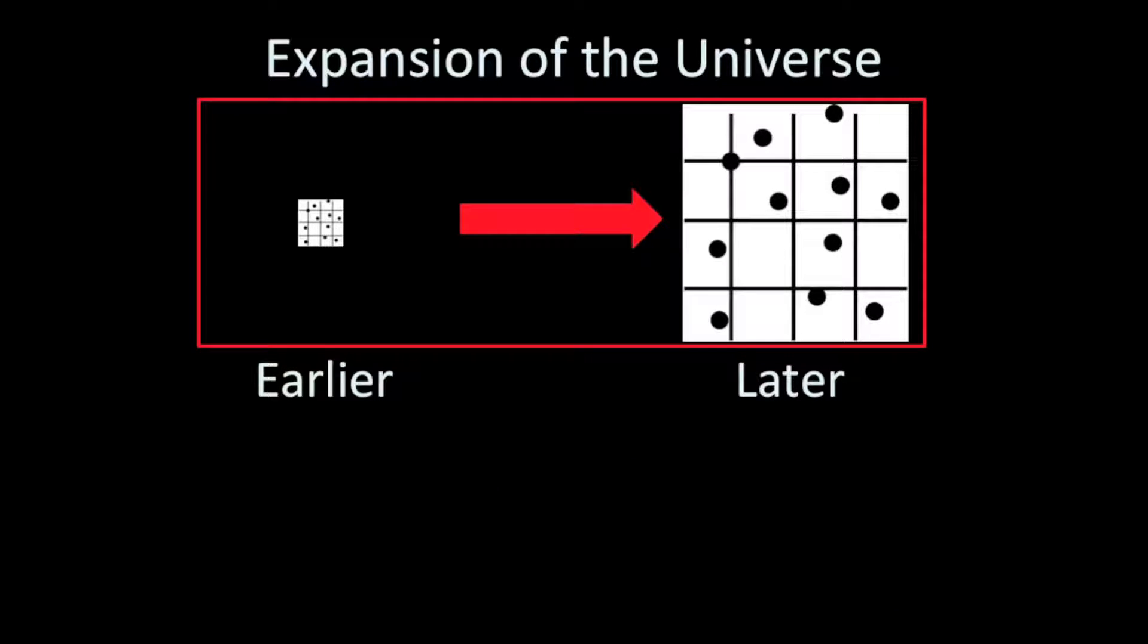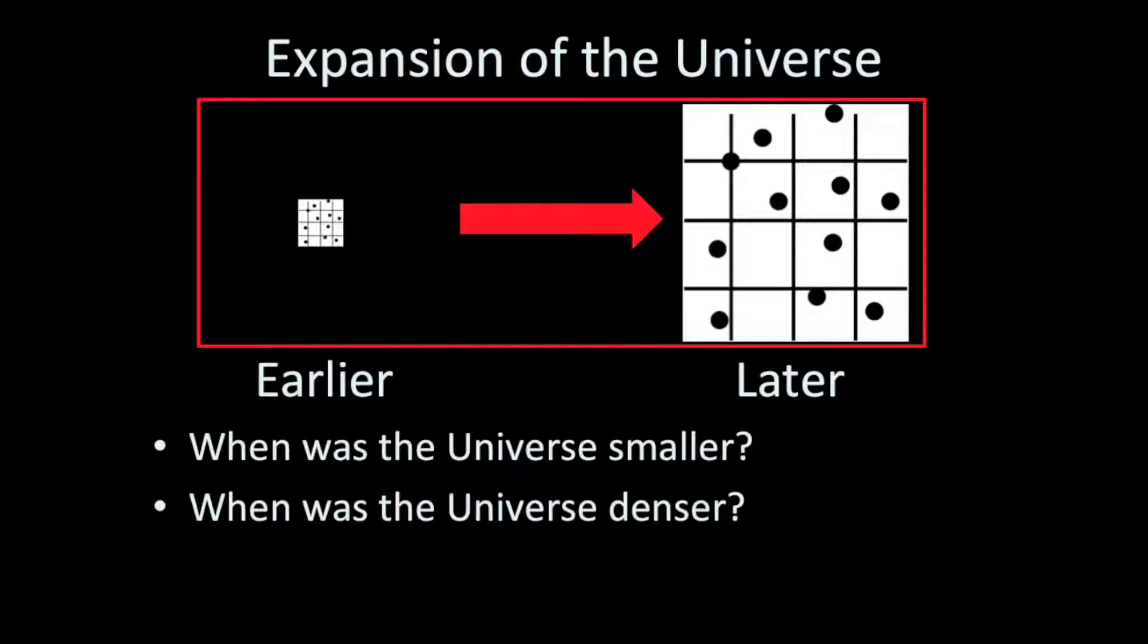So let's examine this correct model a little bit more. I have marked here earlier and later. When was the universe smaller, earlier or later? It's pretty obvious that it was smaller earlier in time, and today it's larger. But what about this? When was the universe denser? To think about this, we have to consider that the matter-energy content of the universe has stayed the same over time. We're not creating or destroying matter-energy in the universe. If the universe was smaller in the past, then it was denser in the past. The same amount of matter-energy content existed in a smaller volume of space.